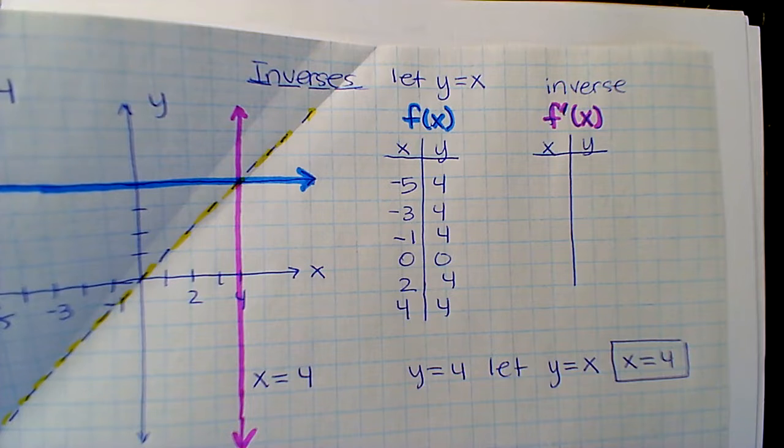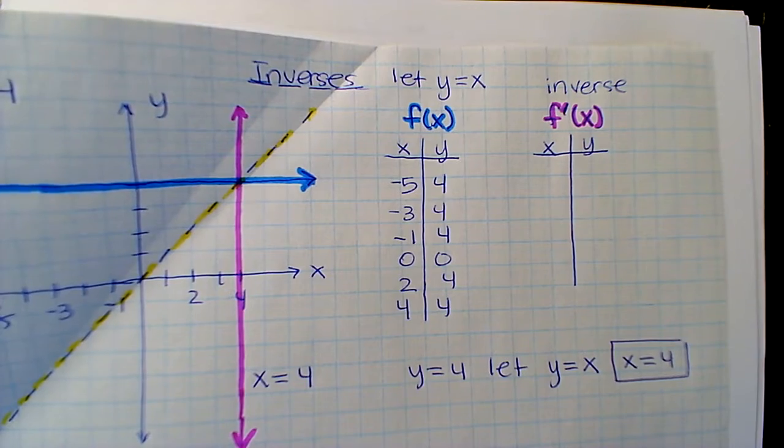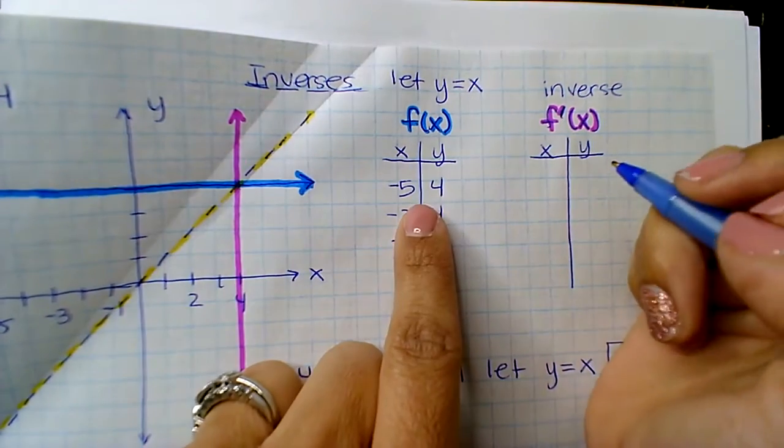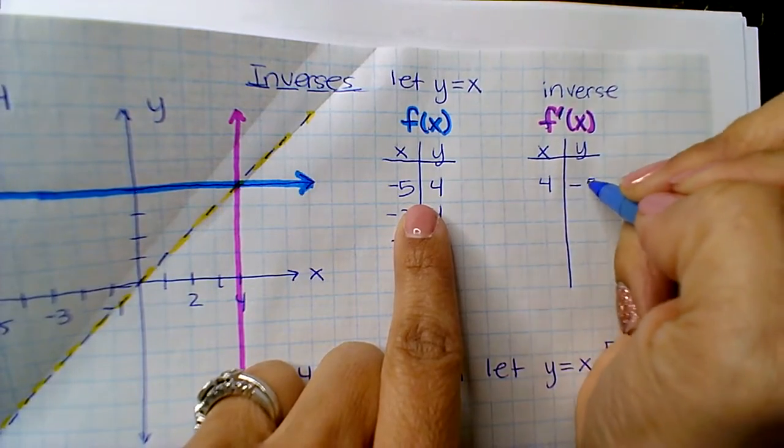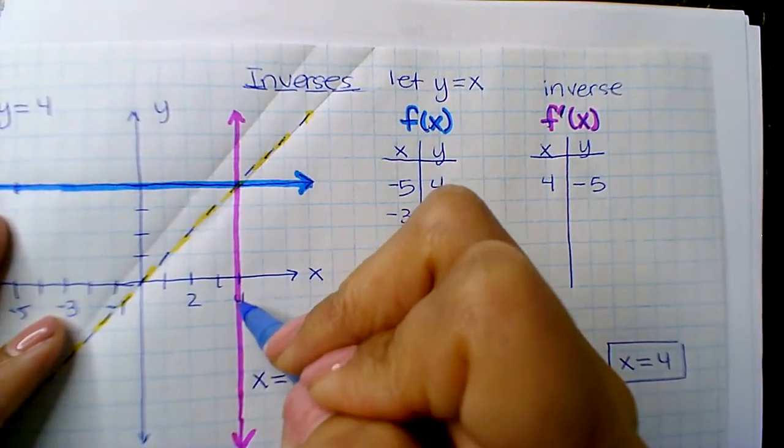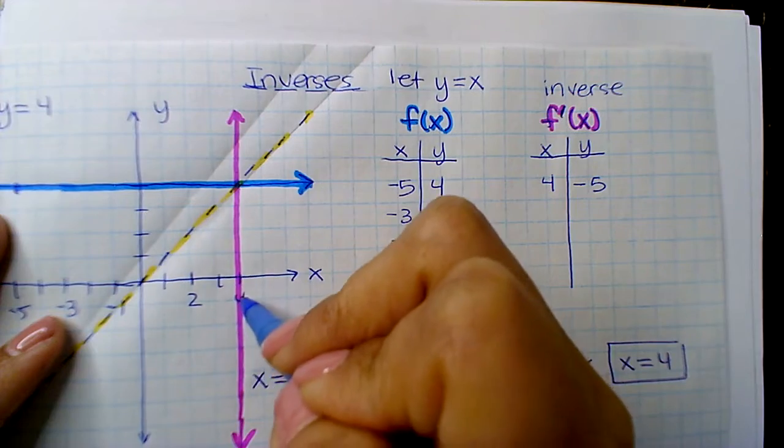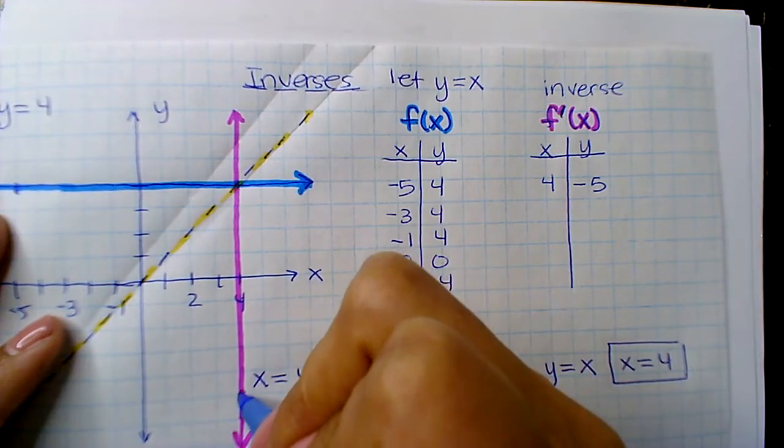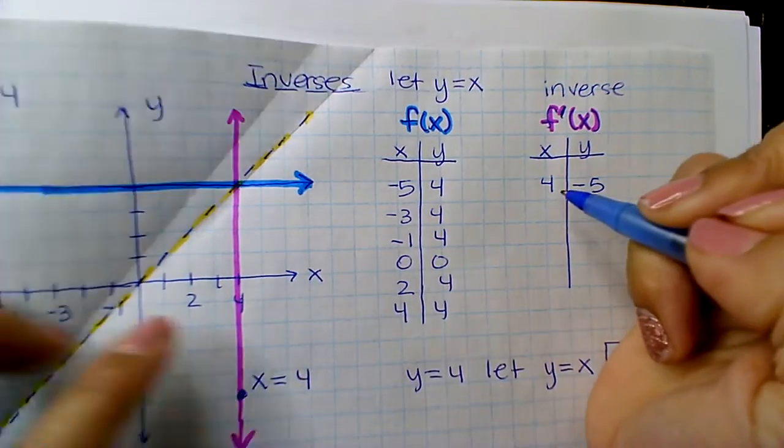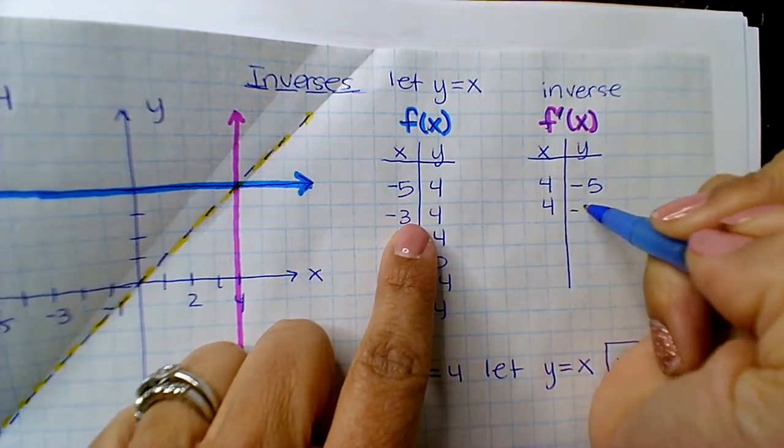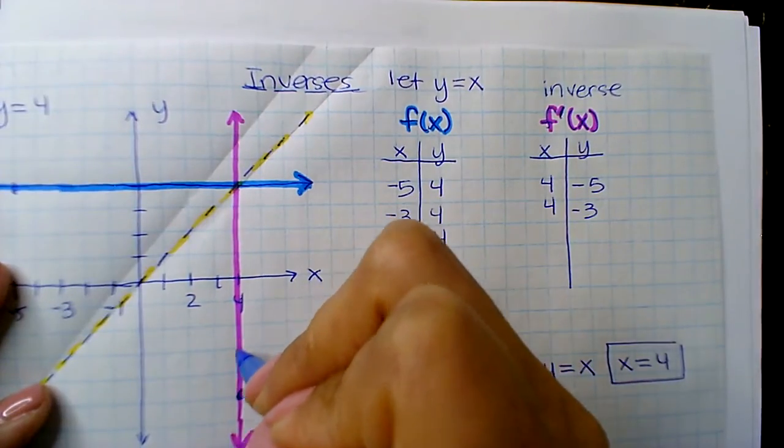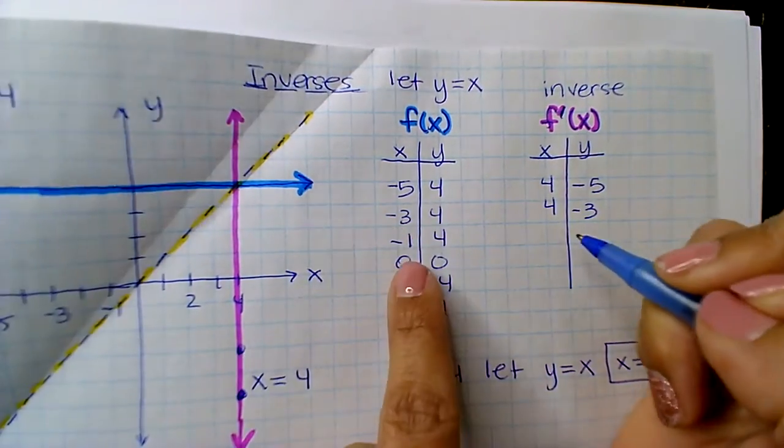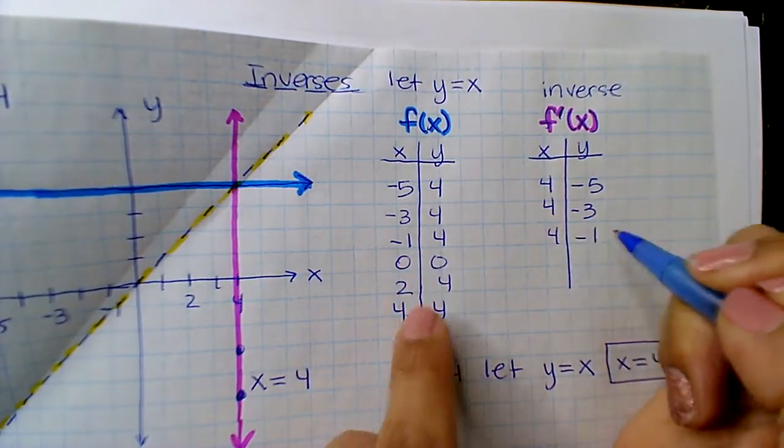So notice if it's negative 5, 4, it's 4, negative 5. And if I check 4, negative 5, 1, 2, 3, 4, 5, here's that point. If I find negative 3, 4, it's 4, negative 3. 1, 2, 3, 4, negative 1.